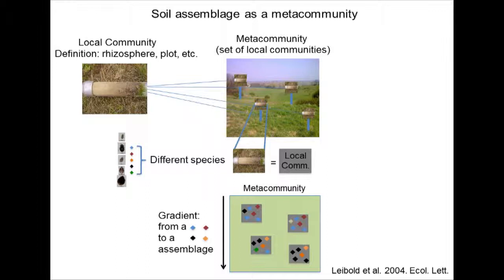If we are to conceptualize the soil assemblage as a metacommunity, the first thing we have to do is define what the local community is. Very often for me, but also for microbial ecologists, this might be the rhizosphere of a single plant, but it may be any unit you find suitable — for example, the plot of your field experiment. Eventually you have a collection of local communities with some isolation between them, and that's a metacommunity.